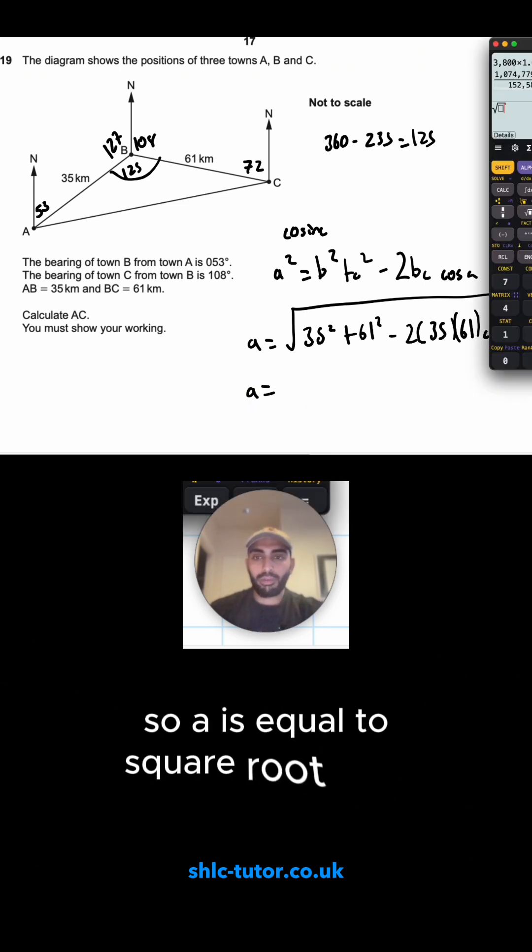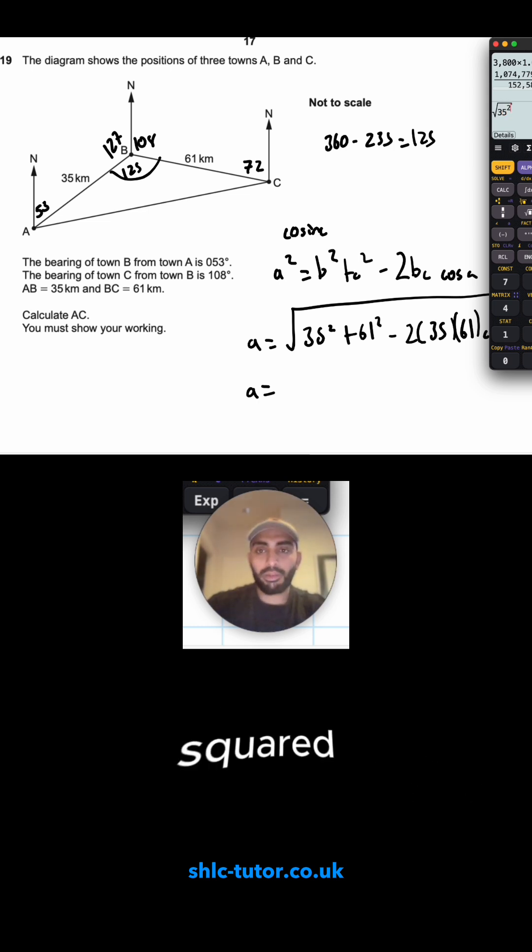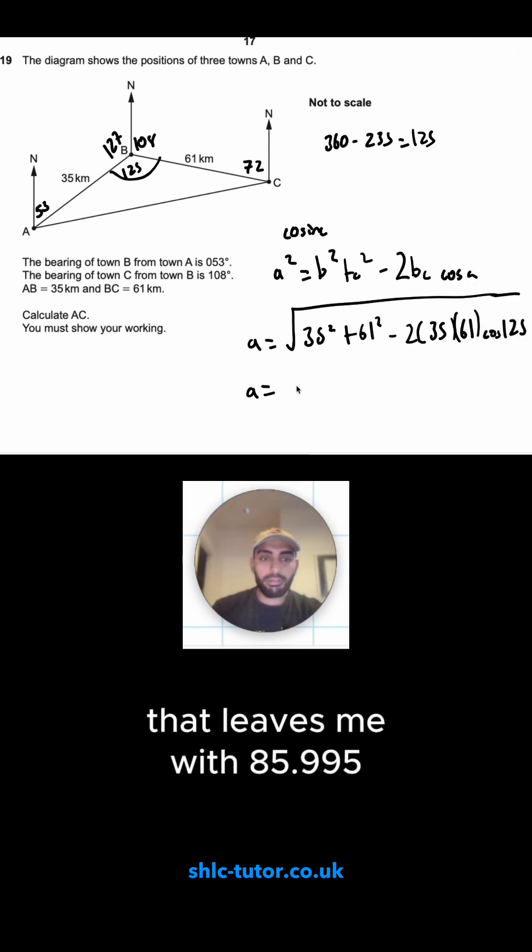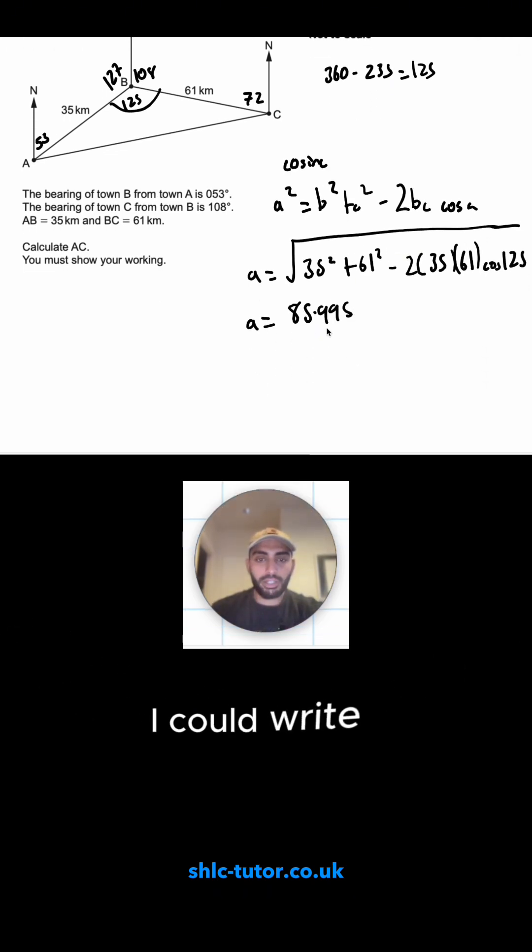So a is equal to square root of 35 squared plus 61 squared minus 2 lots of 35 times by 61 cos of 125. That leaves me with 85.995. And if I wanted to round it, I could write it 86.00, which is two decimal places.